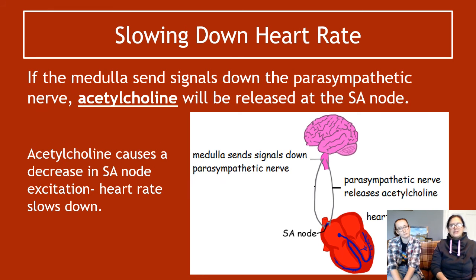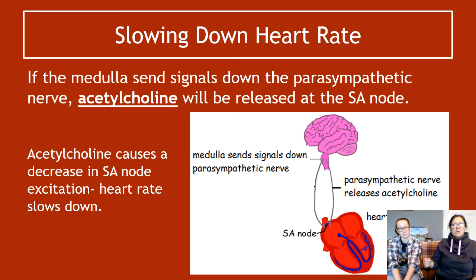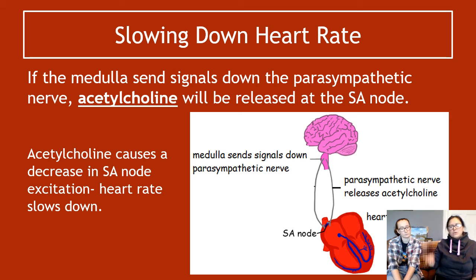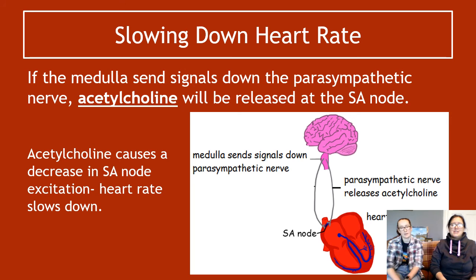To slow down the heart rate, the medulla sends a signal down the parasympathetic nerve pathway. Acetylcholine is released at the end of the parasympathetic nerve, and it acts on the SA node to decrease its excitation rate, slowing the heart rate down.